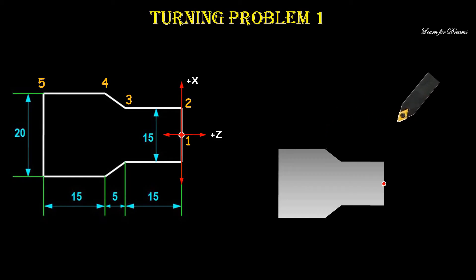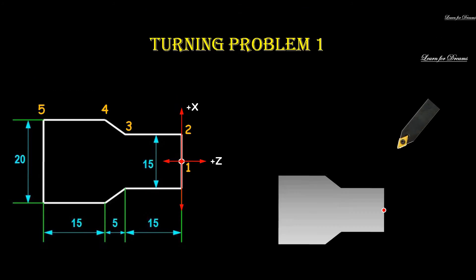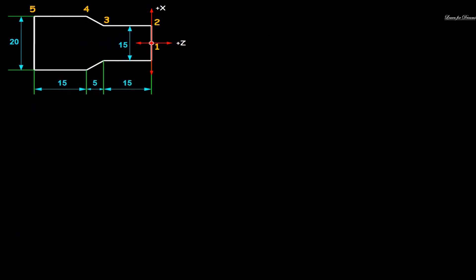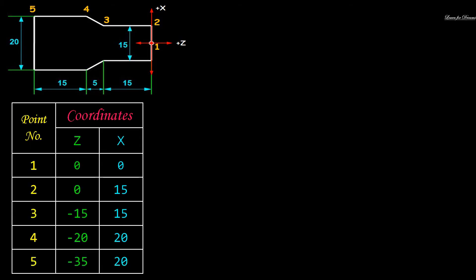Now we will take the tool away from the workpiece. So yeh tha path traveled by the tool. Toh ab dekhte hai how to find the coordinates for each point. Keep this diagram for reference. Pay attention, a very important point: jabhi cutting start karoge toh your Z values will be in negative. X or Z positive kaha hai woh dhyan se dekho.